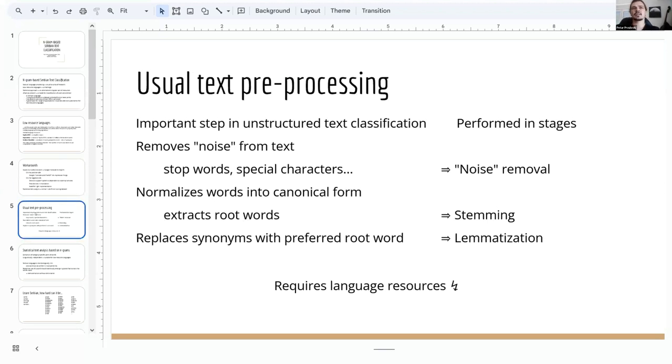Text preprocessing is an important step in unstructured text classification. It aims to remove stop words, special characters, and other elements that can be considered as noise, and to normalize the words into canonical form by extracting the root word called stem. In usual case, it is performed in several stages: noise removal, stemming, and lemmatization. This works well, but has a major problem. It depends on the language resources, and with low-resourced languages, this is the problem.